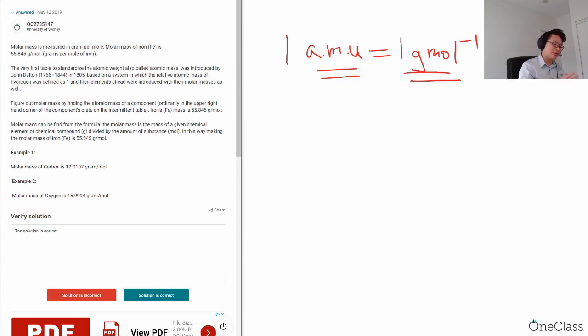And for one mole of substance will be equals to 6.02 times 10 to the power of 23. So for example, one iron atom will be equals to 55.845 amu. And then for one mole of iron, it will be equals to 55.845 gram per mole.